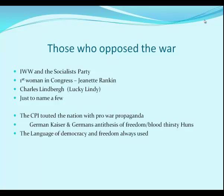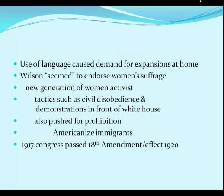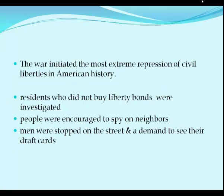This use of the language of democracy and freedom started to cause demand for expansions of rights at home. At first Wilson seemed to endorse women's suffrage, then started backing off — but a new generation of women activists began using tactics like civil disobedience, wearing pants, walking in demonstrations, and carrying signs in front of the White House. They were also pushing for prohibition. In 1917 Congress passed the 18th Amendment, which didn't take effect until 1920.